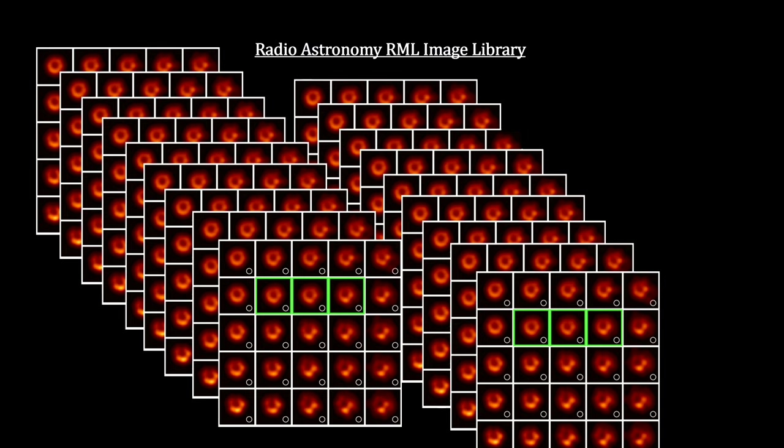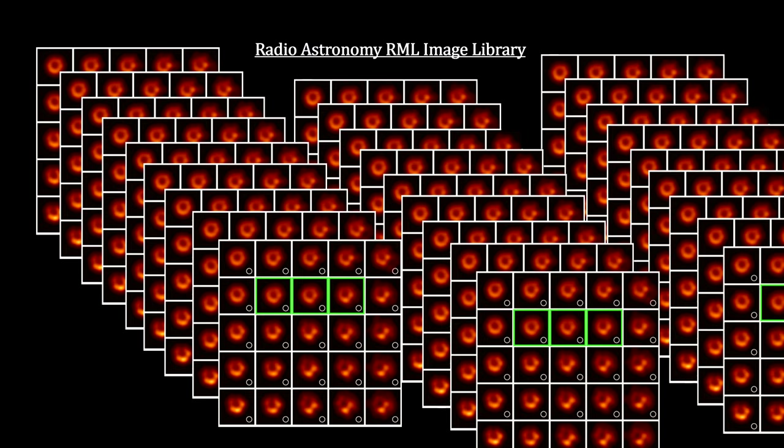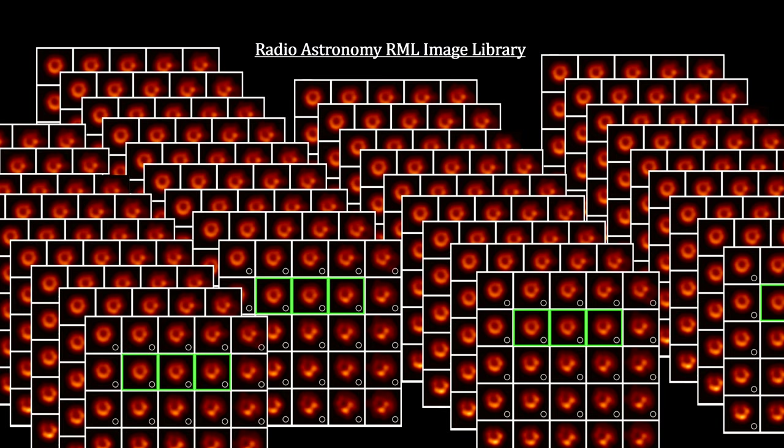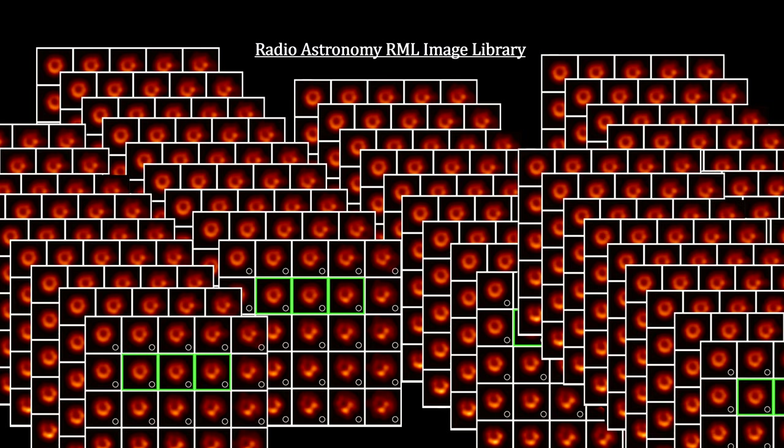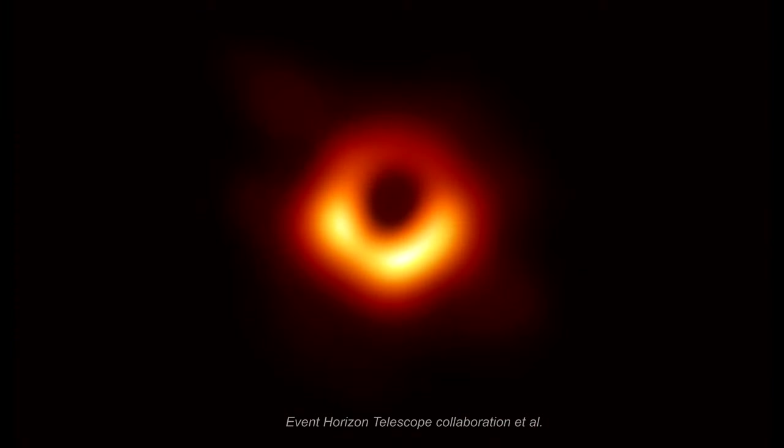A library of tens of thousands of images was created with different parameter combinations associated with general relativistic magnetohydrodynamics. Using both clean and RML on the visibilities, this image was developed.